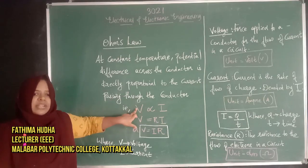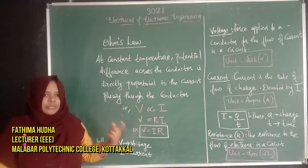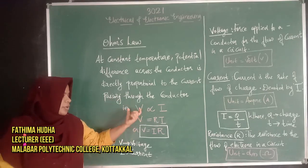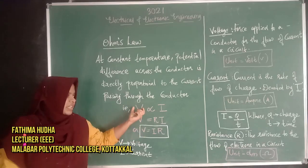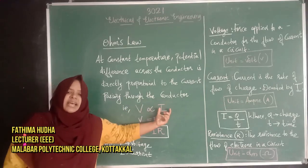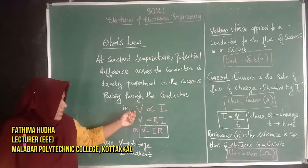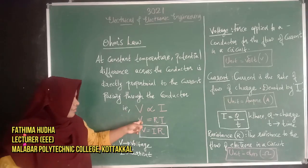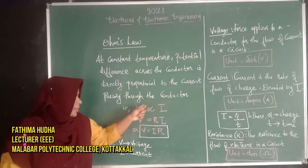The voltage is V. At constant temperature, the potential difference between a conductor is directly proportional to the current. This equation is V proportional to I.